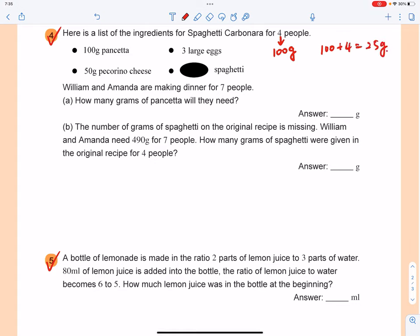Now how many people do we have? We got seven. So you need to use 25 times by seven, which gives you 175 grams. So that's the answer to the first one.